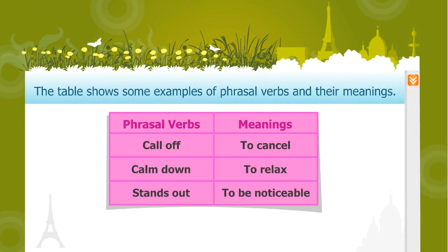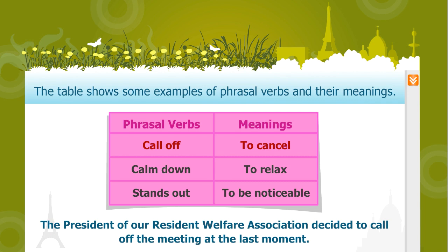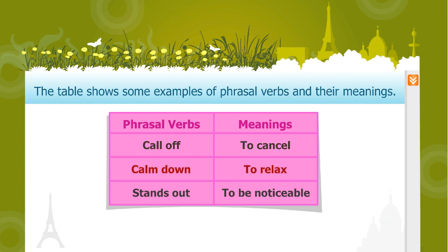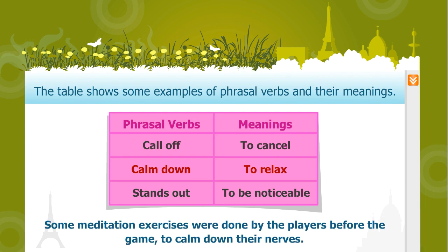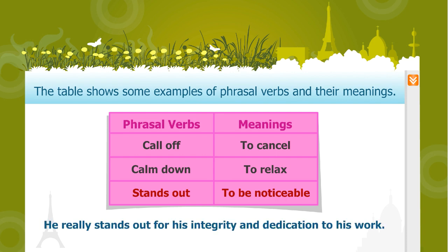The table shows some examples of phrasal verbs and their meanings. The phrasal verb 'call off' means to cancel. For example, the president of our resident welfare association decided to call off the meeting at the last moment. The phrasal verb 'calm down' means to relax. For example, some meditation exercises were done by the players before the game to calm down their nerves. The phrasal verb 'stands out' means to be noticeable. For example, he really stands out for his integrity and dedication to his work.